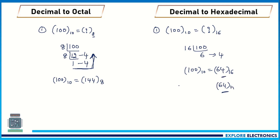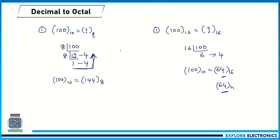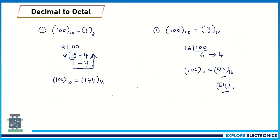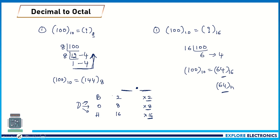This is how we convert decimal to octal and decimal to hexadecimal. For any fractional part, the same approach applies: multiply by 2 for binary, by 8 for octal, or by 16 for hexadecimal. For the integer part, divide by 2, 8, or 16 respectively. That covers conversion from decimal to all other number systems.